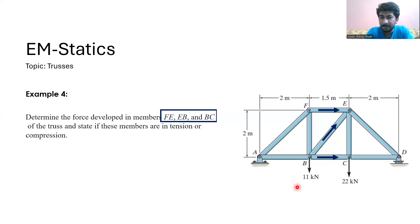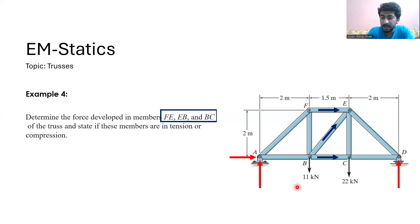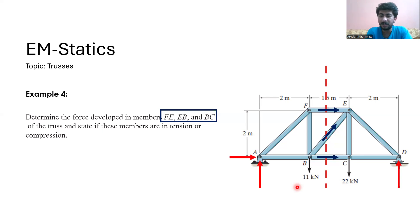There is a pin joint at point A and a pin joint at point D. We are applying the method of sections in this problem, and for this purpose I am going to draw a section line between these members. We can use either the right side or the left side of the truss.